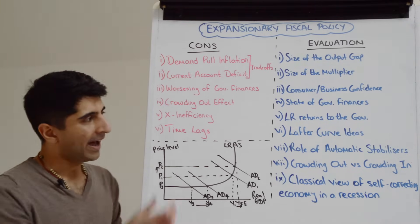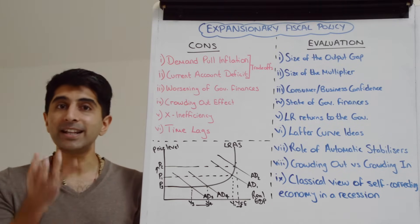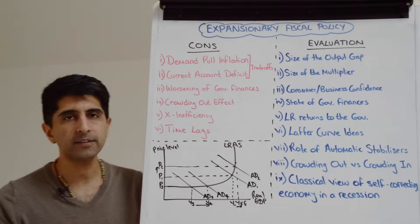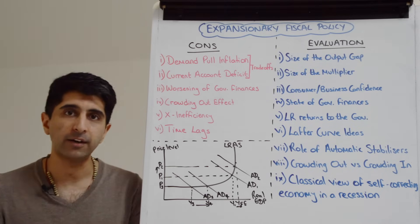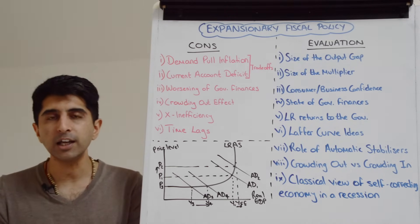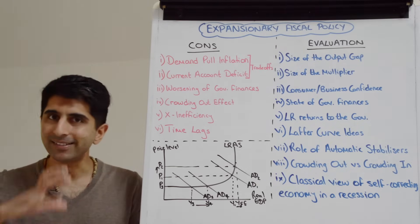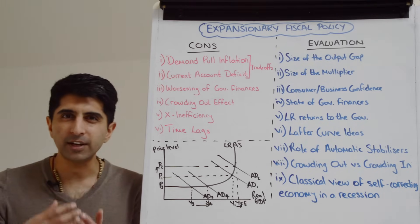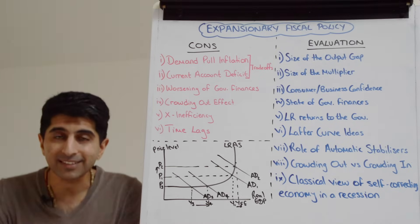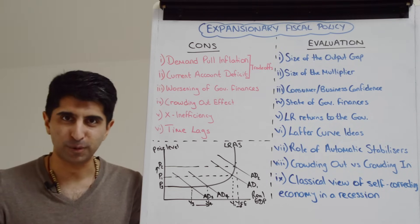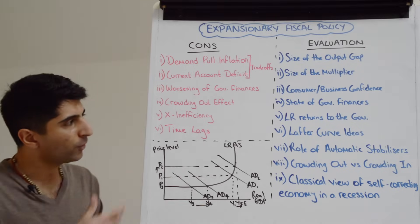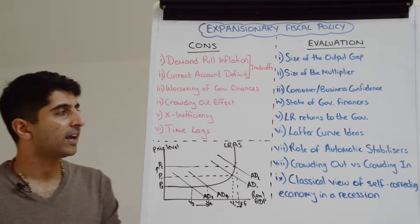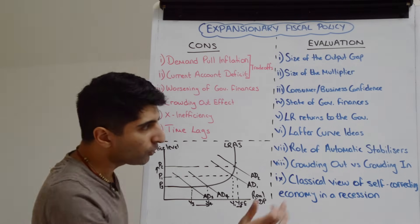We can also bring in Laffer curve ideas as evaluation. An income tax cut may actually lead to higher tax revenues for the government due to incentive effects: workers have an incentive to work harder, longer hours, and be more productive to earn more disposable income. Entrepreneurs take more risks, increasing tax revenues. Additionally, lower income taxes reduce incentives to tax evade or avoid paying taxes, further increasing government revenues.